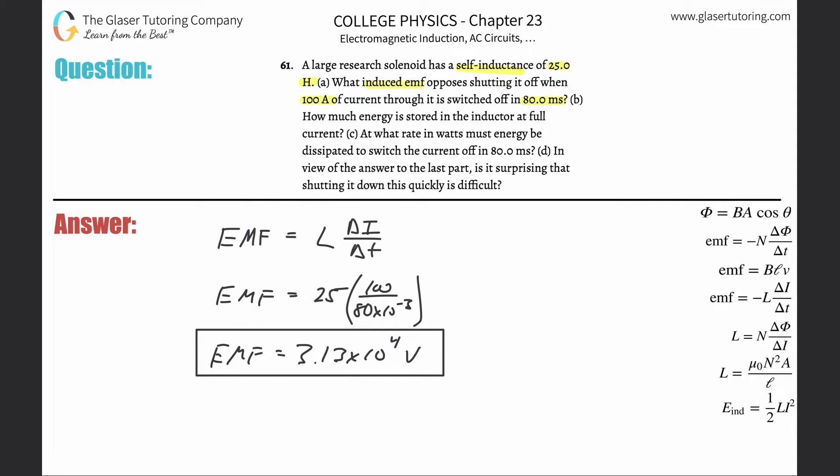All right, so that's letter A. Let's do letter B. It says how much energy is stored in the inductor at full current? So we're going to use this formula down here that the energy that is stored in the inductor will equal one-half times the value of the inductance multiplied by the current squared.